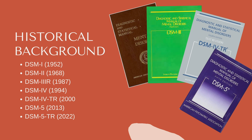In 1968, the DSM-2 was published, and it expanded the number of diagnostic categories to 182 but retained a largely psychoanalytic perspective. DSM-2 continued to categorize homosexuality as a mental disorder, a classification that would later be revised. The DSM-1 and 2 were used for statistical purposes, as the title suggests, but were not guides to clinical practice.